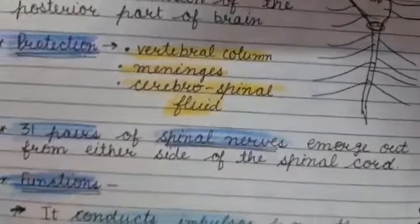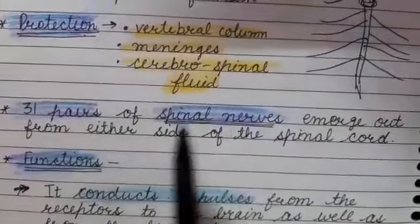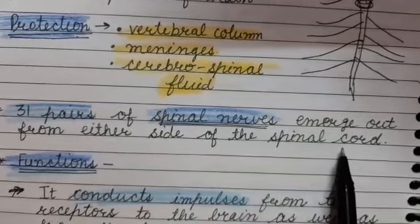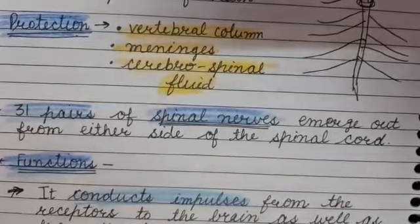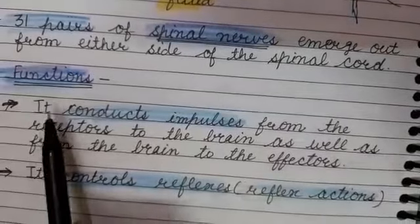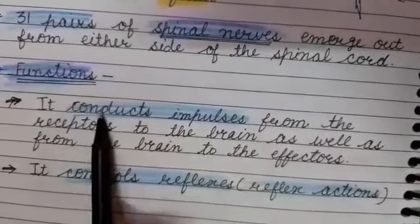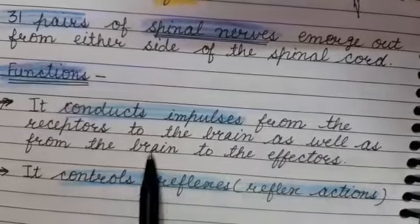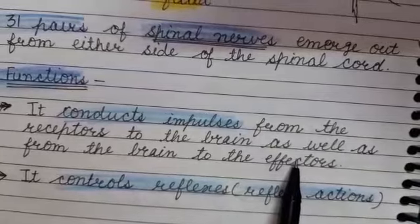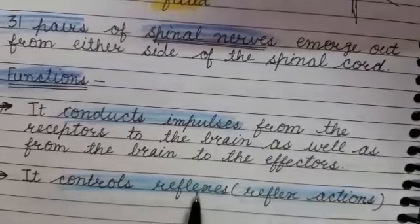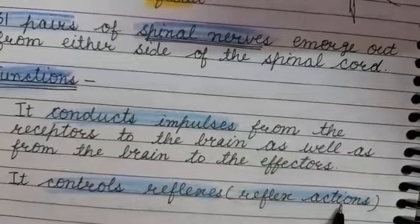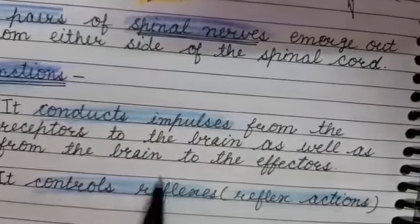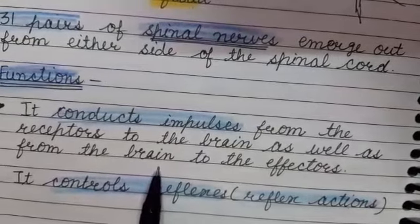31 pairs of spinal nerves emerge from either side of the Spinal Cord and connect various body parts. The two main functions of the Spinal Cord are: first, it conducts impulses from the receptors to the brain as well as from the brain to the effectors; second, it controls reflex actions. These are the two main functions of the Spinal Cord.